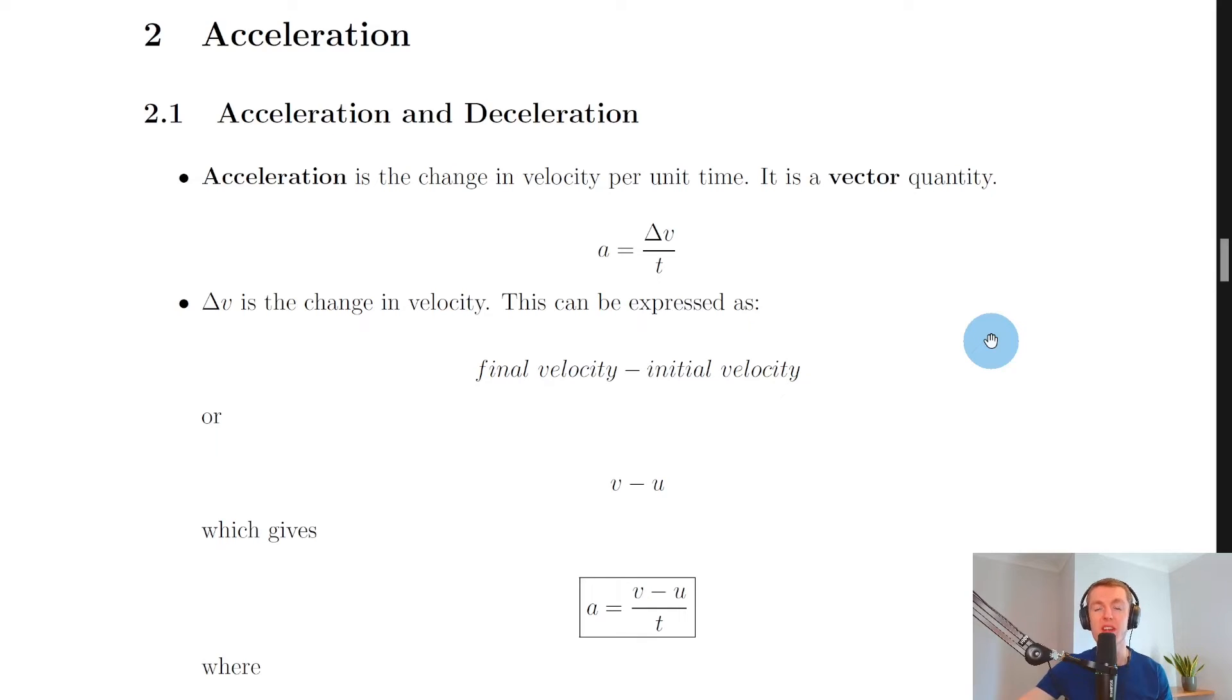We'll start by looking at the definition for acceleration and then we'll look at an equation involving acceleration, velocity and time. So we define acceleration as the change in velocity per unit time. Remember per unit time means each second or per second. So we're interested in how much does the velocity of an object change each second. And remember acceleration is a vector quantity which means we do need a direction as well as a magnitude when we're stating accelerations.